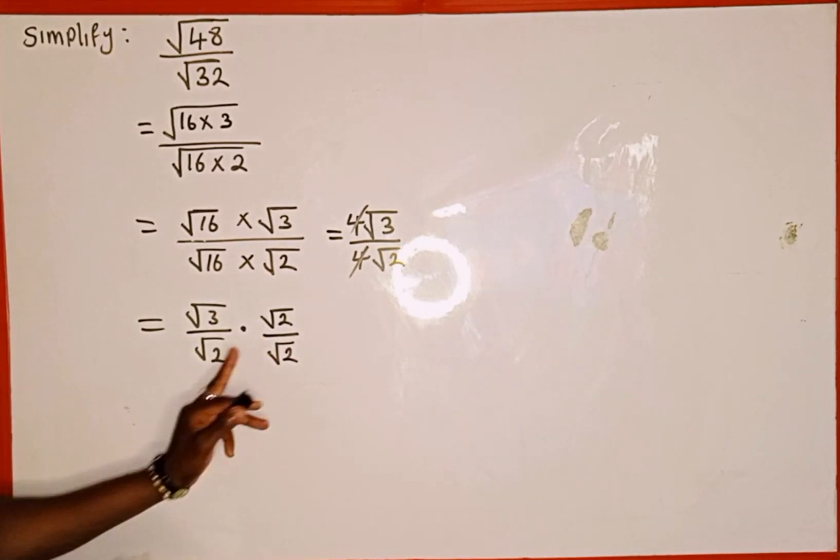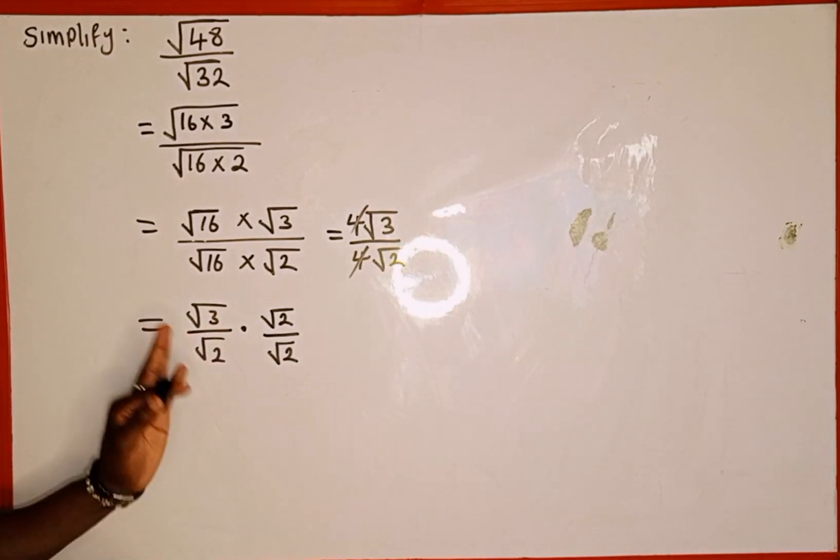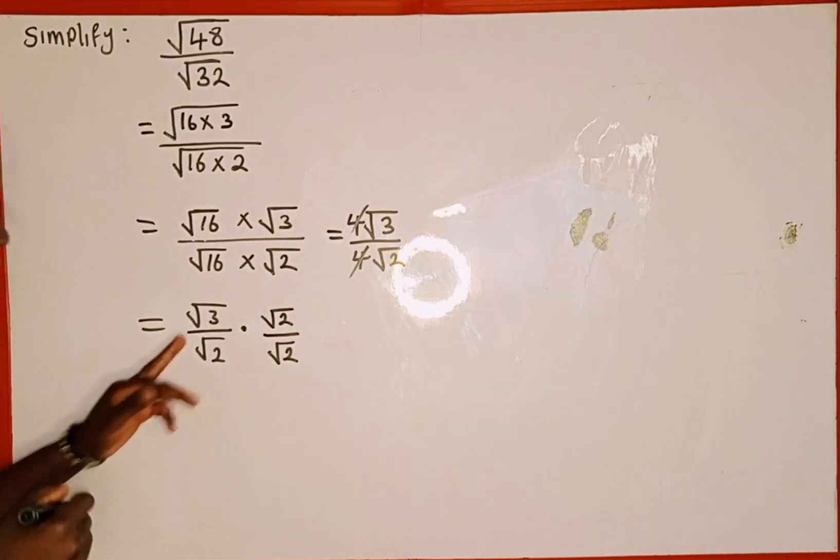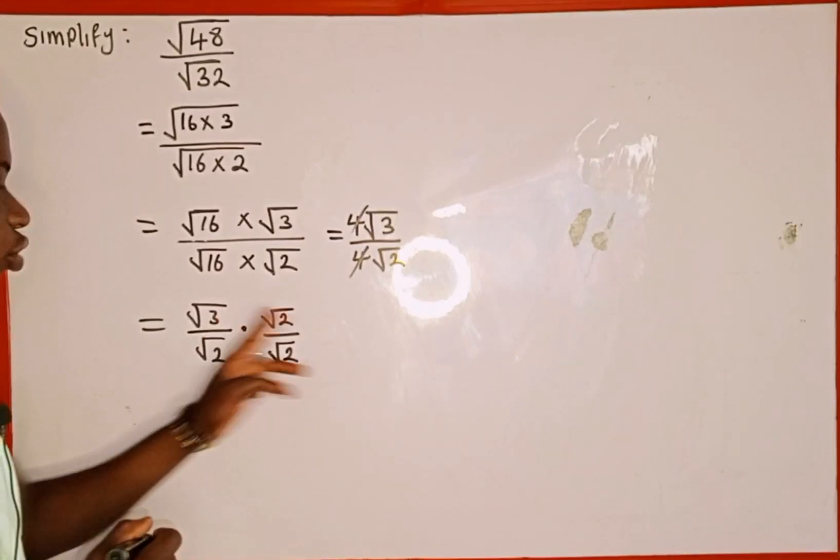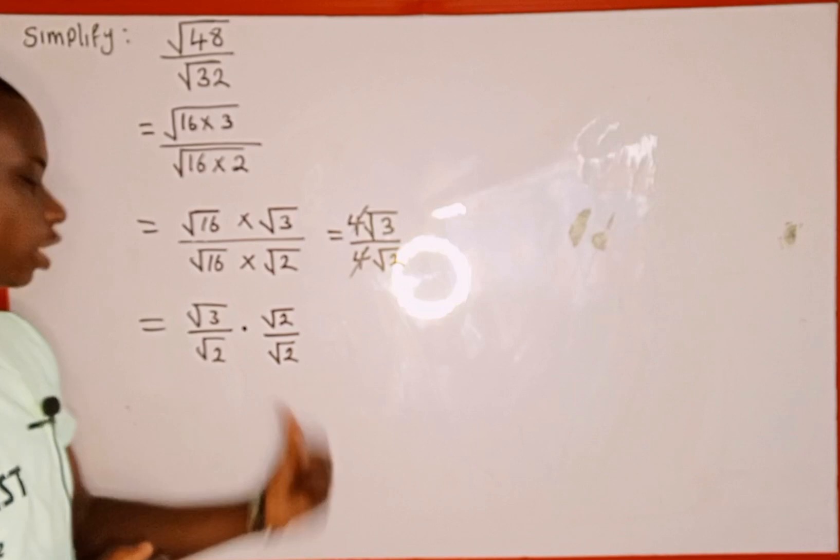So if you divide it, it's going to give us 1. When you use that one to multiply this, nothing changes. It's still the same. Since it is multiplication, then we can multiply the numerator and also we multiply the denominator.